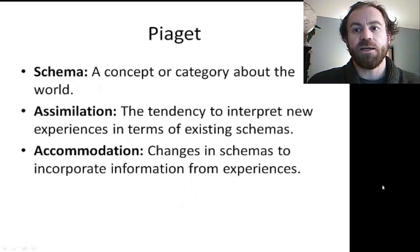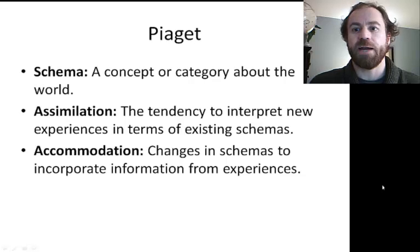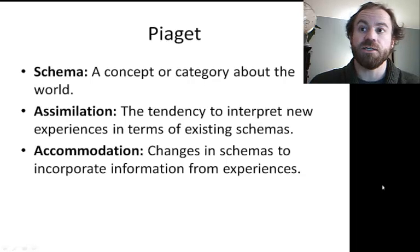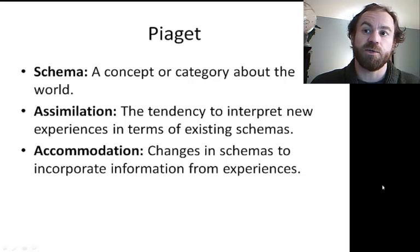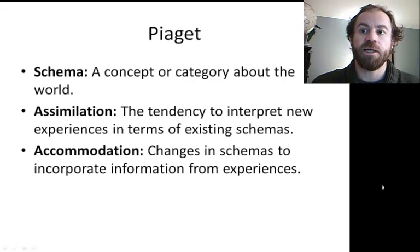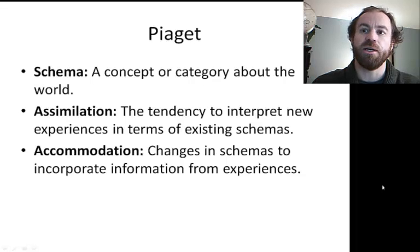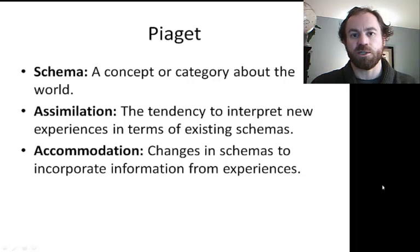Child development involves the child adapting to the environment by using his or her existing ideas about the world and changing those ideas in response to his or her experiences. Piaget also expanded the concept of schema — the way in which we categorize and understand the world around us. The schema is a concept or category about the world; assimilation is the tendency to interpret new experiences in terms of the existing schema; and accommodation is the changes in schema to incorporate information from new experiences.